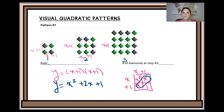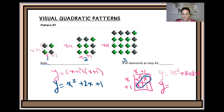To figure out the number of diamonds at step 43, we simply replace x with 43. You can do that in either the factored form or the standard form — it doesn't matter. So y is equal to 1936.